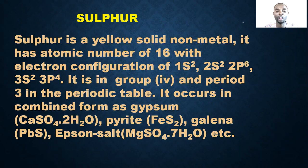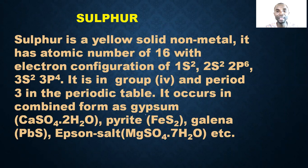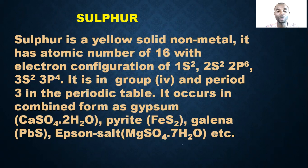In combined form, sulfur appears as calcium sulfate — hydrated calcium tetraoxosulfate(VI), which is gypsum. Iron pyrite is FeS₂. Galena is lead sulfide. Epsom salt is hydrated magnesium tetraoxosulfate — the pentahydrate form.